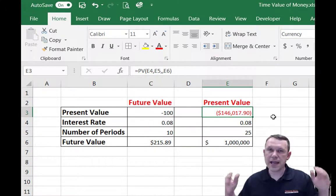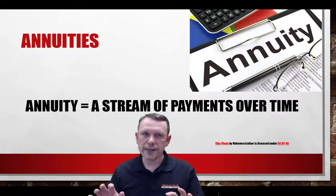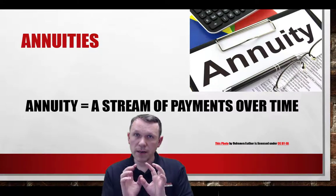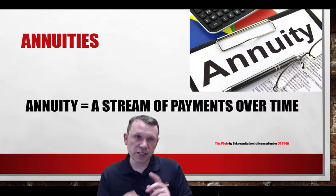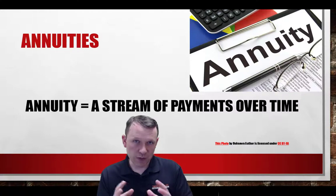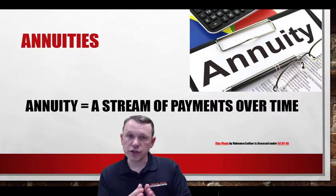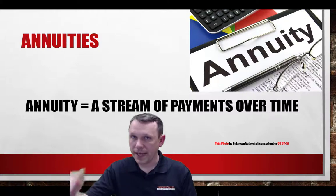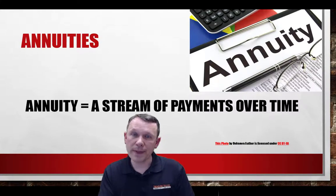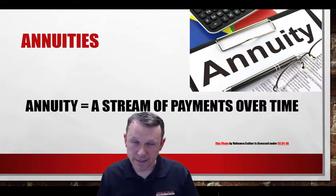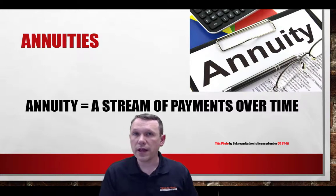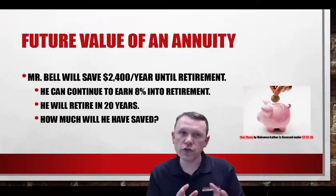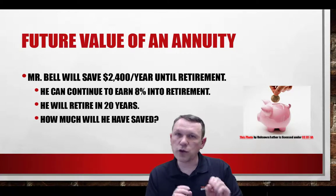One more concept with time value of money — especially important for personal finance — is the annuity. Because we operate on a monthly budget cycle in personal finance, annuities connect our budget with time value of money when saving over time. An annuity is a stream of payments over time: it can be payments we make into an investment, or a stream of payments we receive upon retirement. It works for both future value and present value.